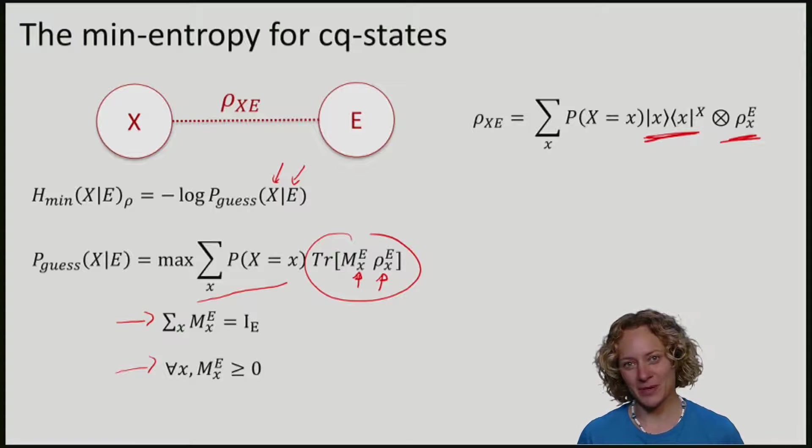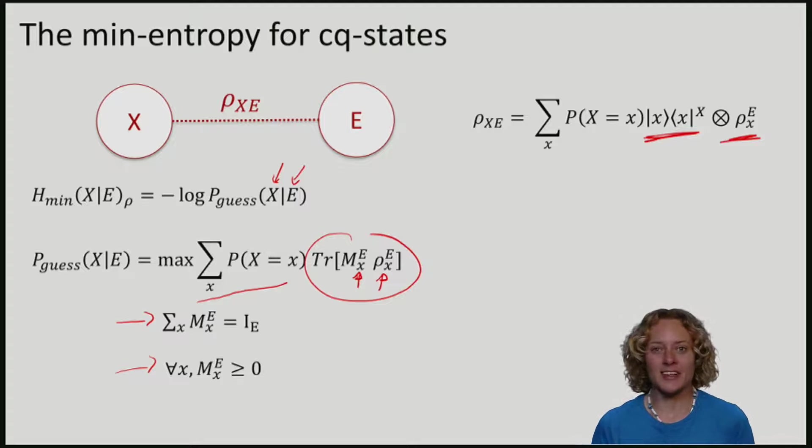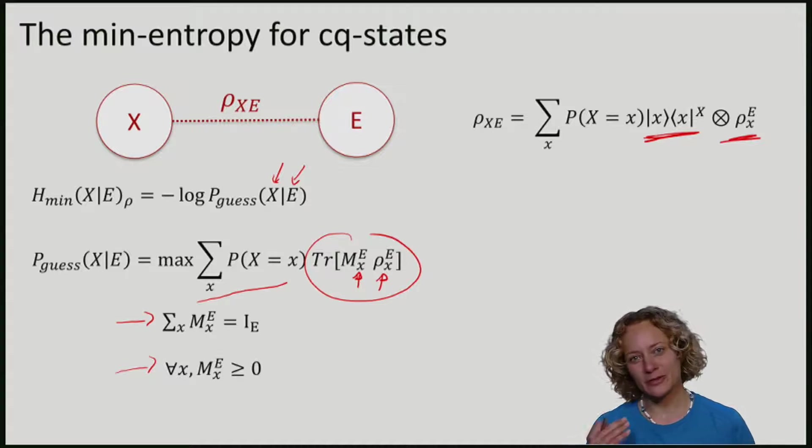This is the min-entropy for classical quantum states. It has a few very nice properties.